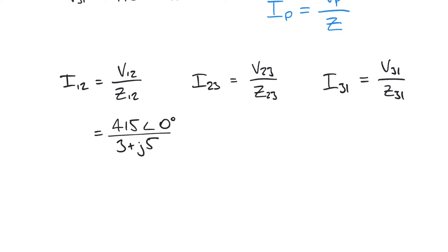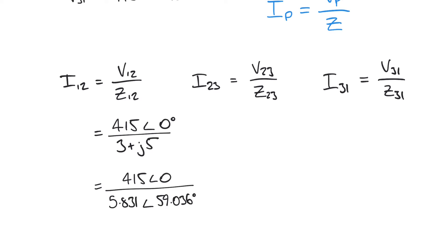Like in our star network video, we have a numerator in polar form and a denominator in rectangular or Cartesian form. We need to be consistent — it's probably easier to perform this division in polar form. So let's convert the denominator into polar form. Using the same impedance as in our previous video — 3 + j5 — we get 5.831 at an angle of 59.036 degrees.